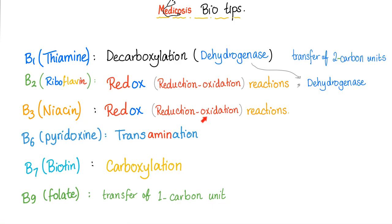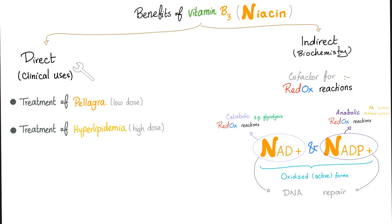Niacin is important for redox reactions, reduction-oxidation reactions. We call these enzymes oxidoreductases. Vitamin B3 has many benefits, including treatment of pellagra and hyperlipidemia, and redox reactions by NAD+ and NADP+. These are the oxidized forms. The reduced forms are NADH and NADPH. The oxidized forms are helpful for DNA repair. Specifically, NAD+ helps with catabolic reactions such as glycolysis. NADP+ helps with anabolic reactions. When you have more letters, you are building up stuff. When you have fewer letters, you are destroying stuff.